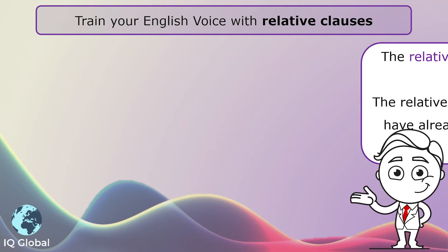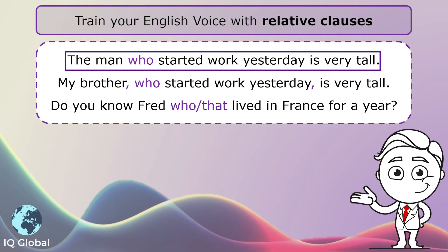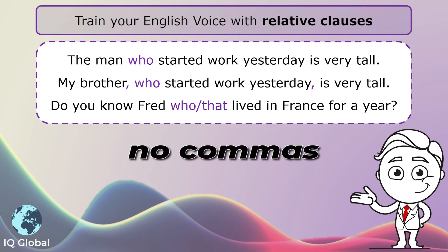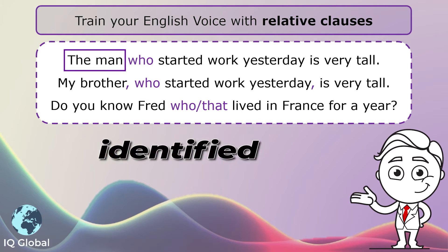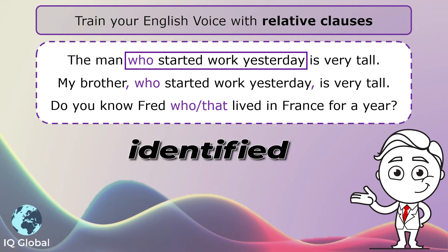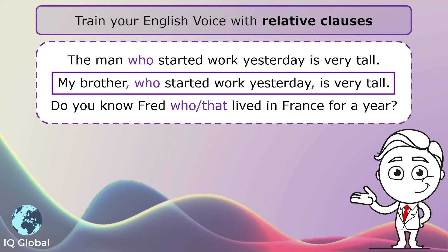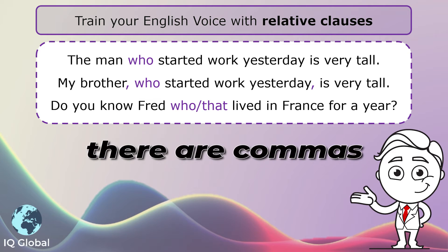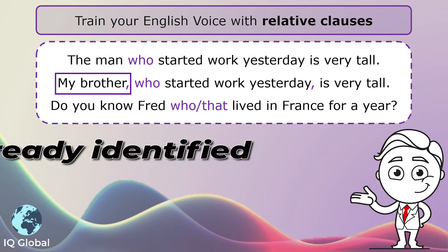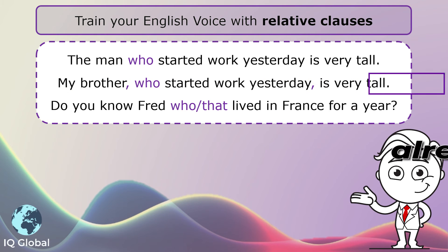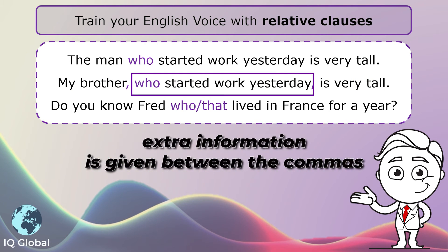Let's look at some example sentences. "The man who started work yesterday is very tall." We see there are no commas in the sentence, and the man is identified as the one who started work yesterday. "My brother, who started work yesterday, is very tall." We see the commas in the sentence — my brother is already identified and extra information is given between commas.